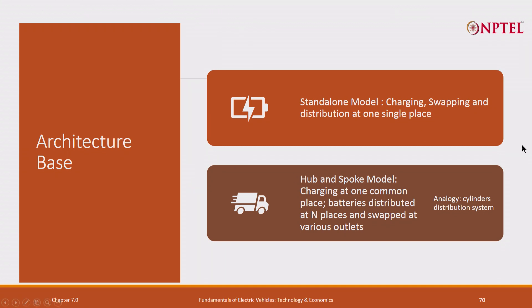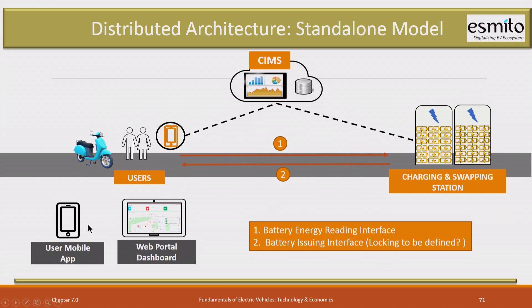A Bluetooth communication will be there and you immediately charge, and it must make economical sense to the service provider. There are two models: charging, swapping, and distribution at one space — this is preferable. The other is hub and spoke: charging at a common place and then distributing at the distribution place.